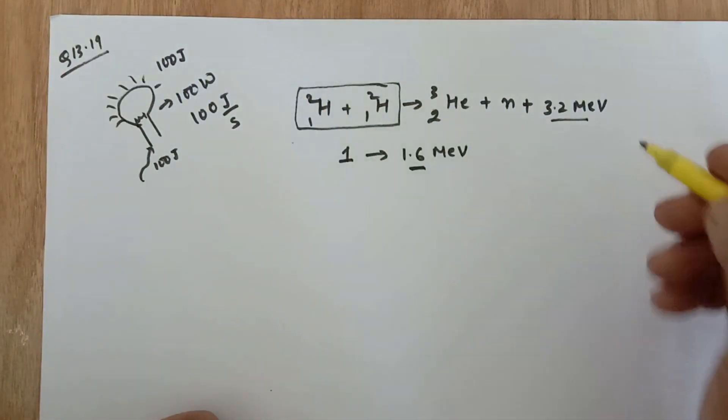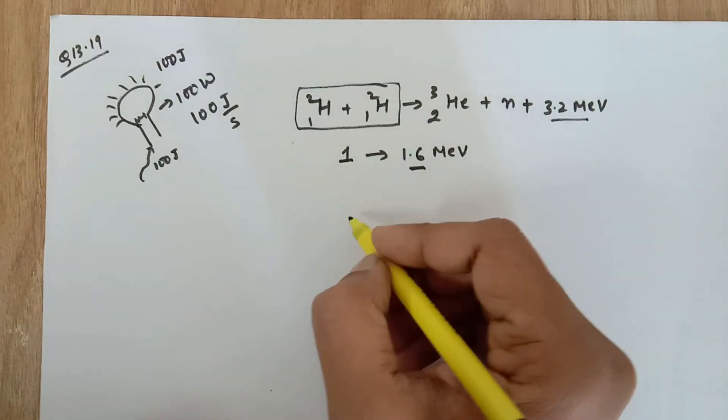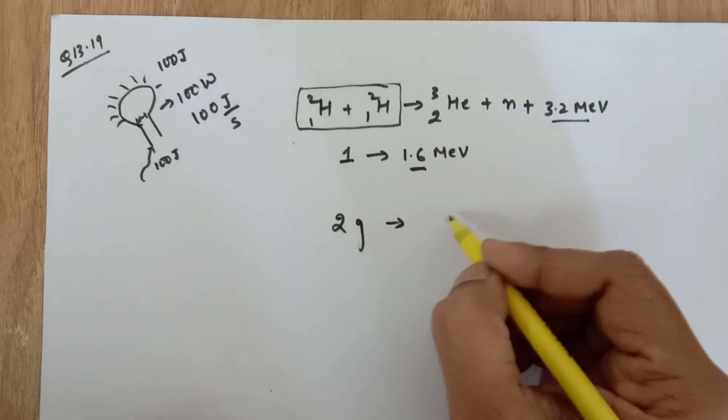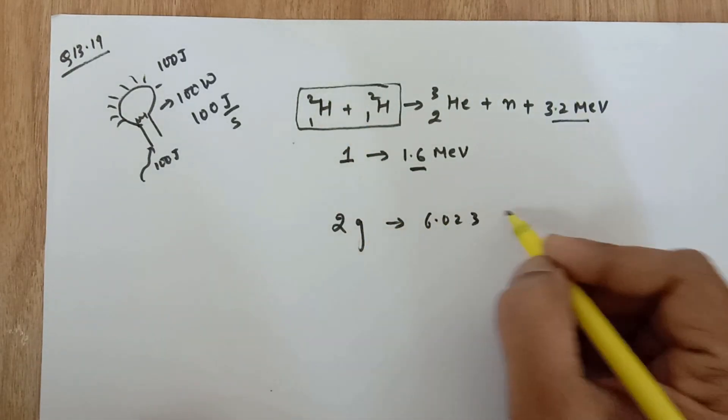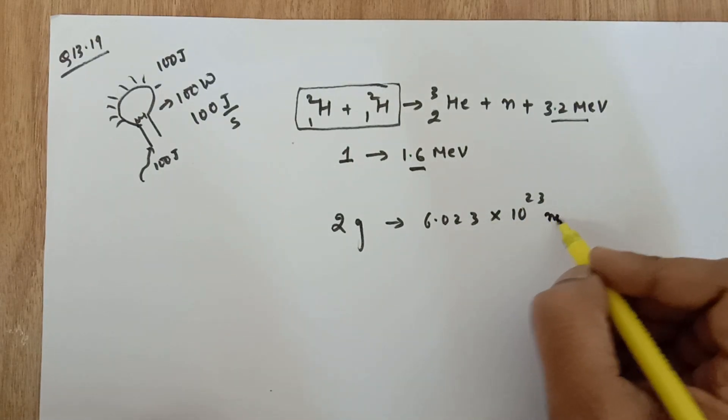Now you have 2 kilos of deuterium atoms. First of all, we need to use the mole concept. We need to find that 2 grams, because 1H2, so 2 grams contain 6.023×10^23 atoms, and 1 atom consists of 1 nuclei.